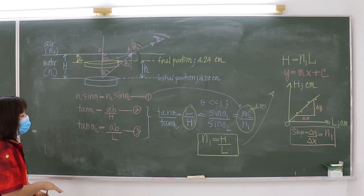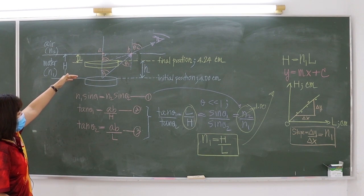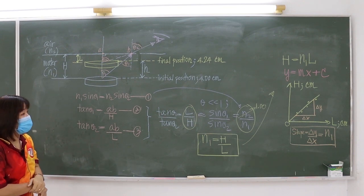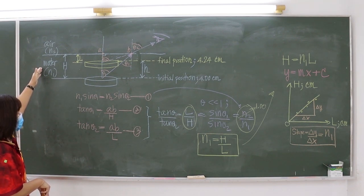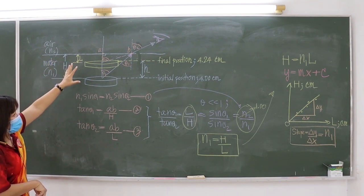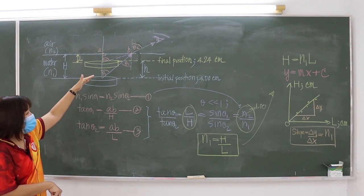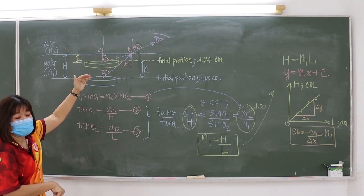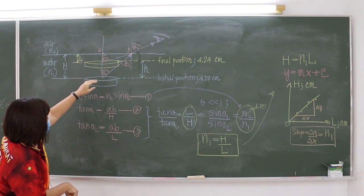For our experiment, we are going to use a coin instead of a fish. We will place the coin into the beaker, at the center and the bottom of the beaker. For part 1, we want to know the refractive index of water, N1, as the first medium. The position of the coin — the real object — is the initial position, which we set up at 4.00 cm.